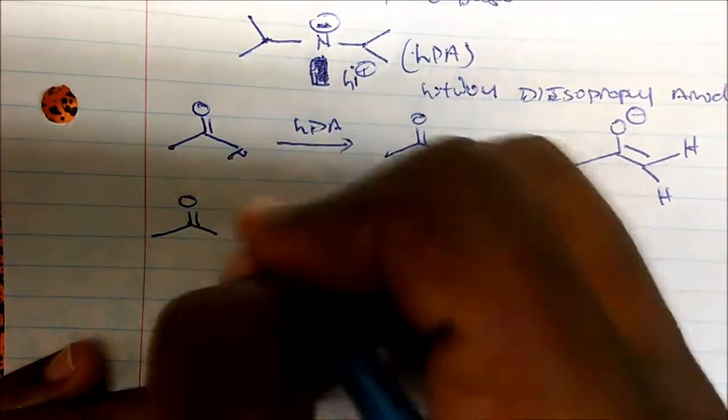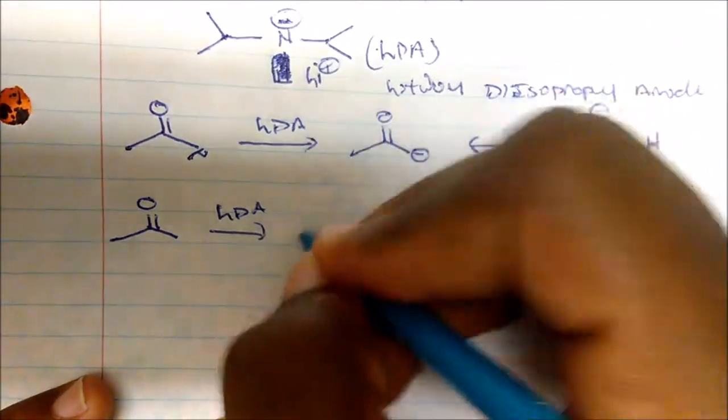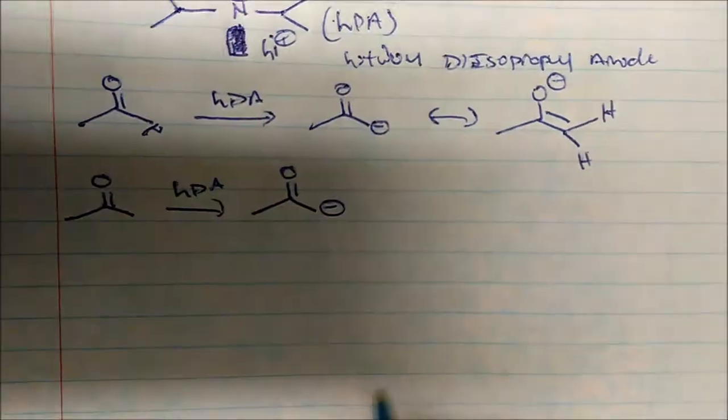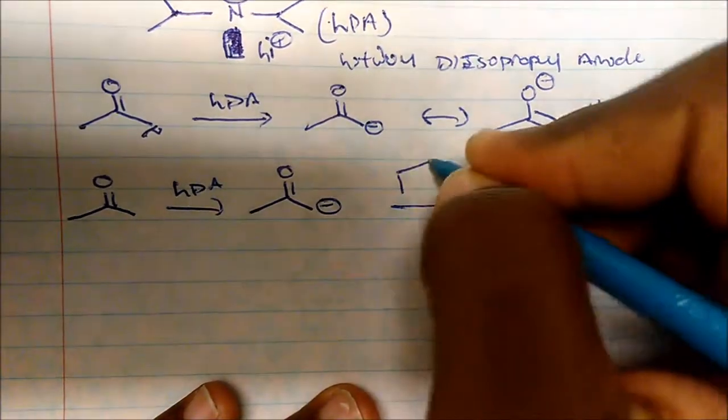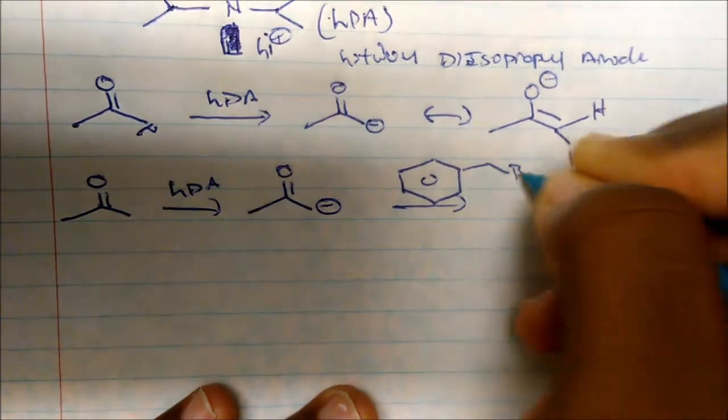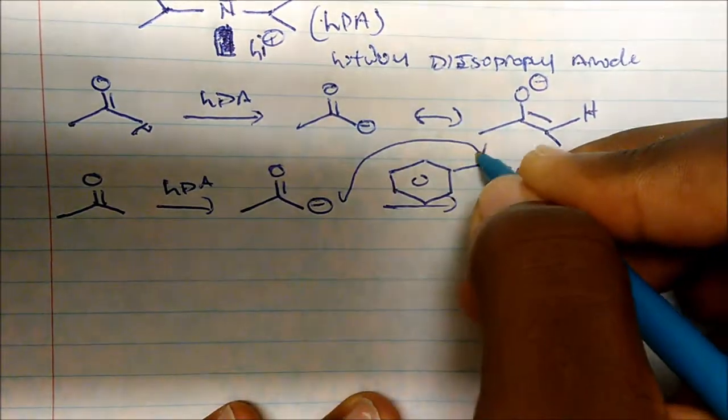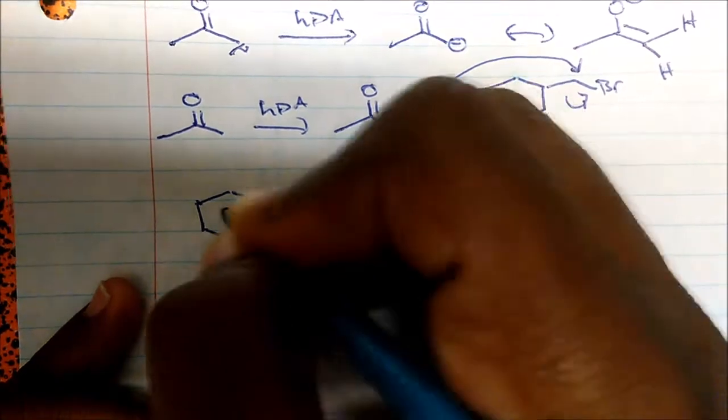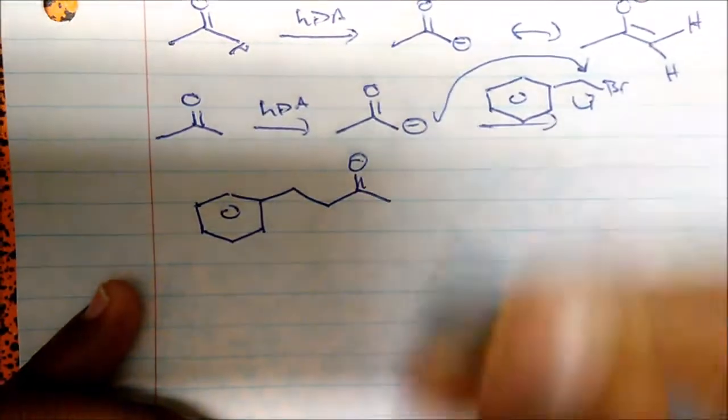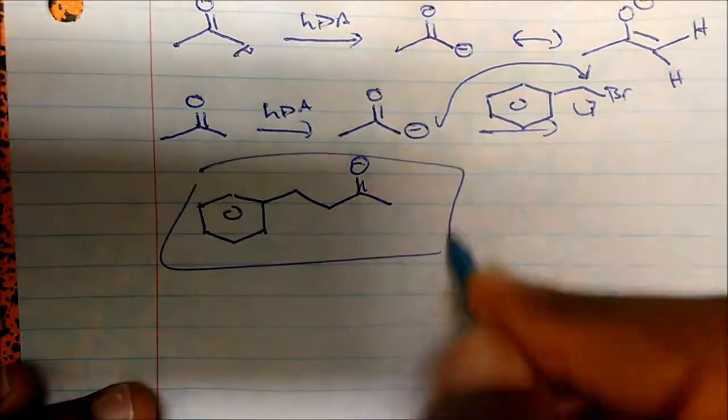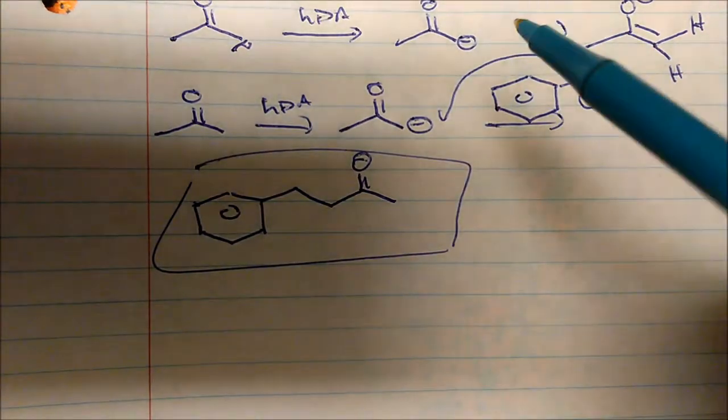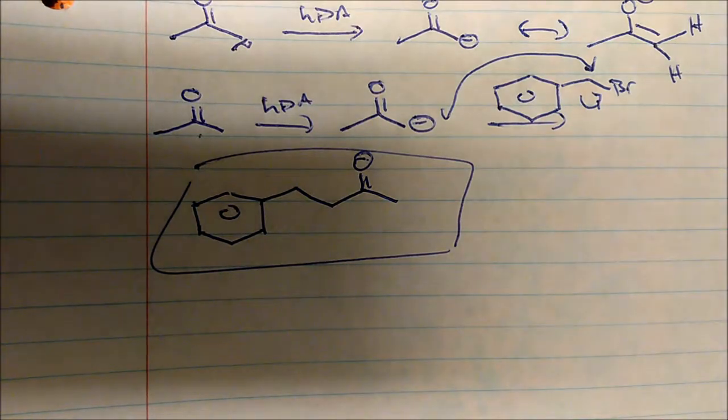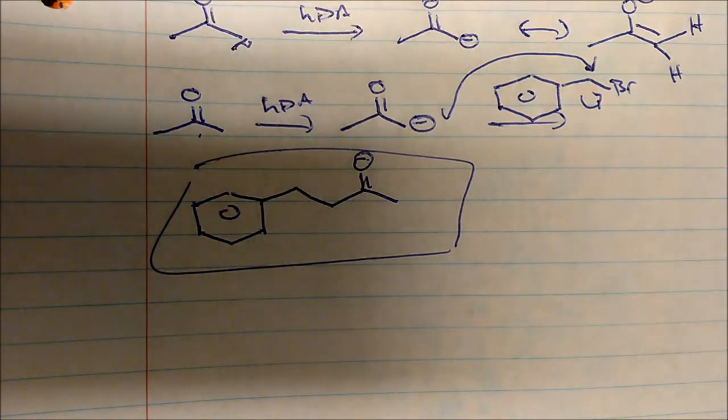What if we treat acetone with LDA? We're going to generate the negative charge, and we could treat it with some sort of alkyl halide, like an SN2 target. This is now going to attack and displace the bromine, and we form a structure with the phenyl group bonded to a carbon that has the ketone group. A strong non-nucleophilic base deprotonates one of those hydrogens to give you that negative charge.